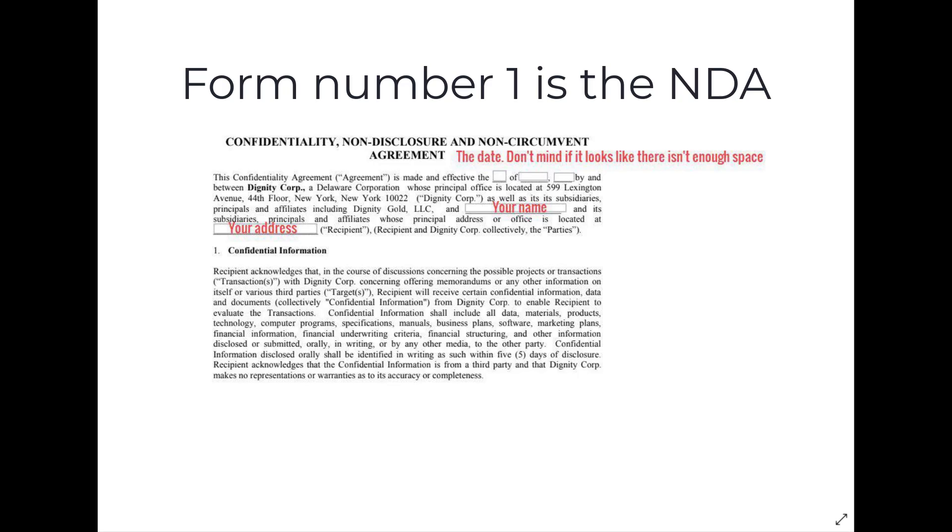The first form, Form 1, is the NDA, and this is so you can receive such things as the business plan. First of all, you write the date — don't worry if it looks like there's not enough space to write, for example, the 25th; it will be okay, just write it correctly. Then write your name, and remember it has to be the exact same name as you put in the KYC process.